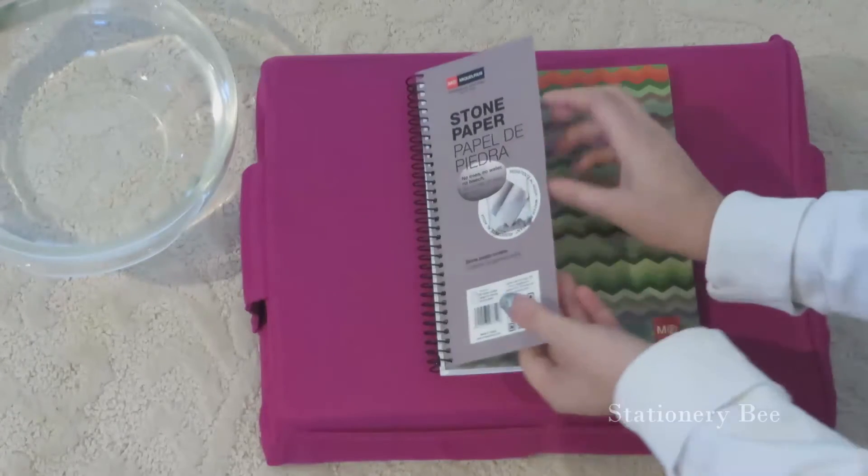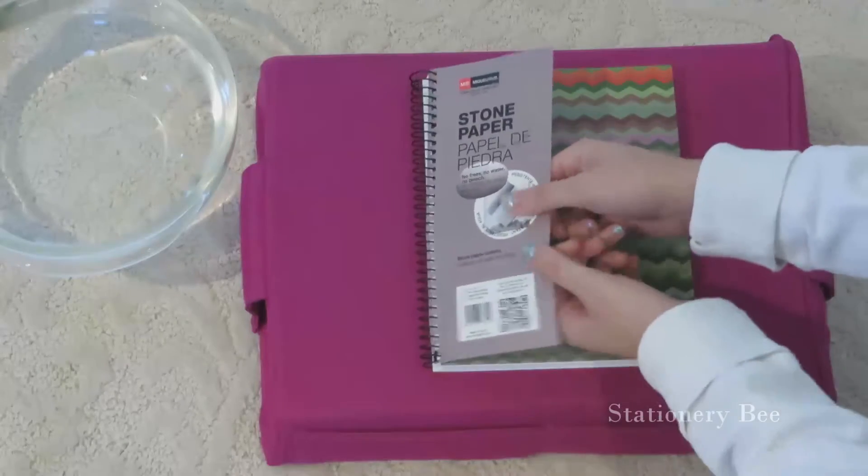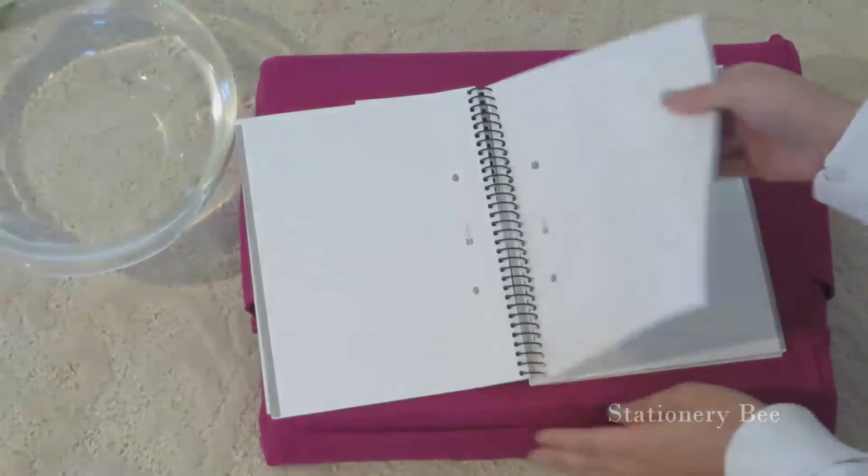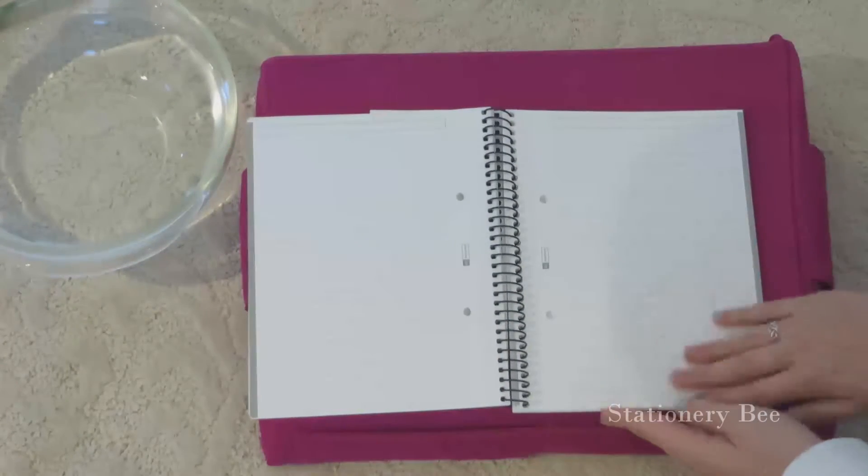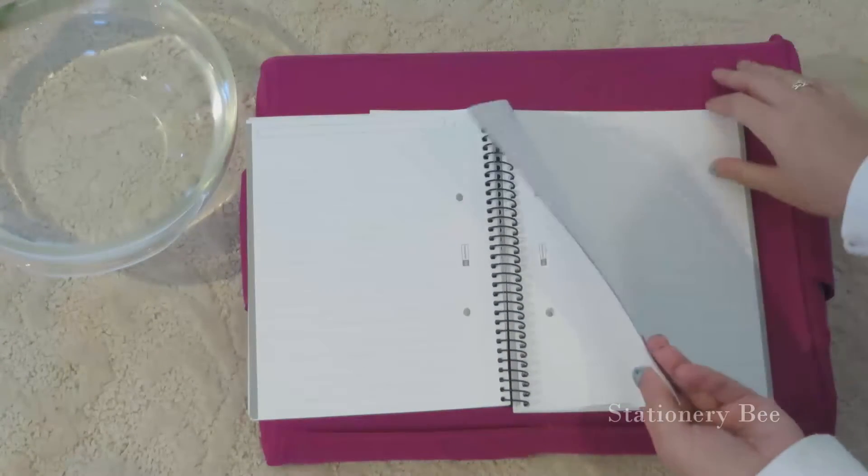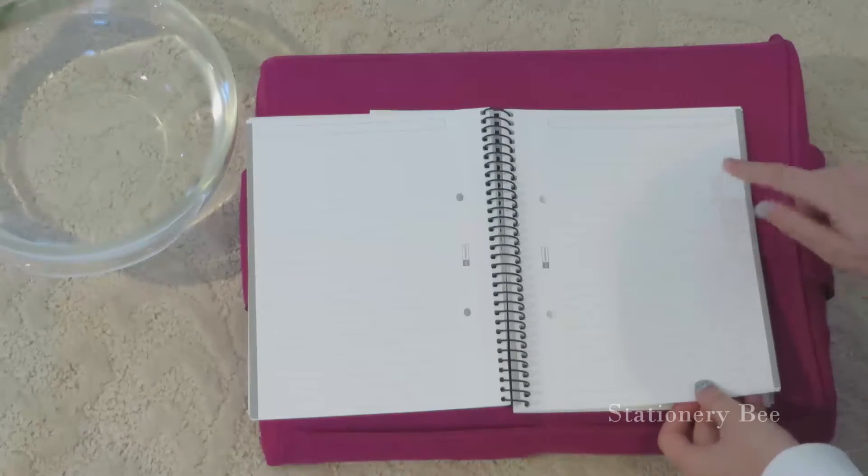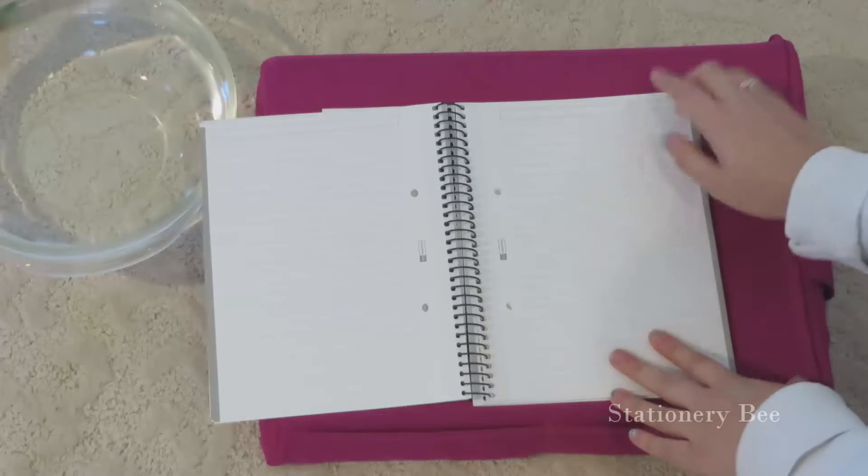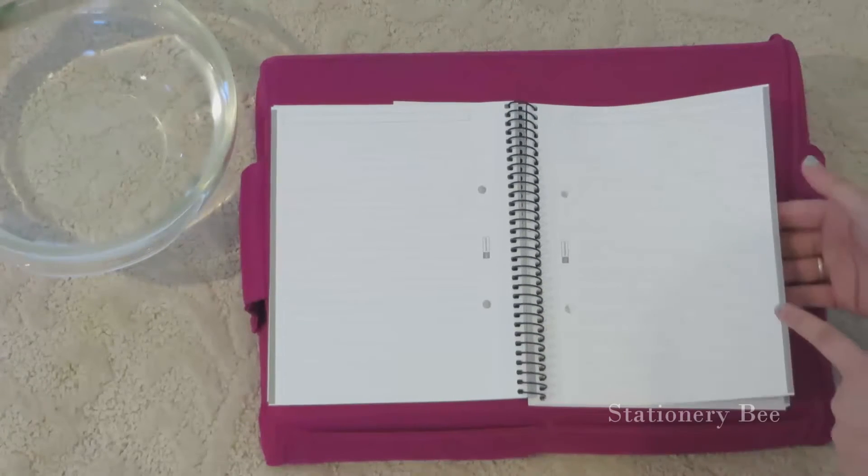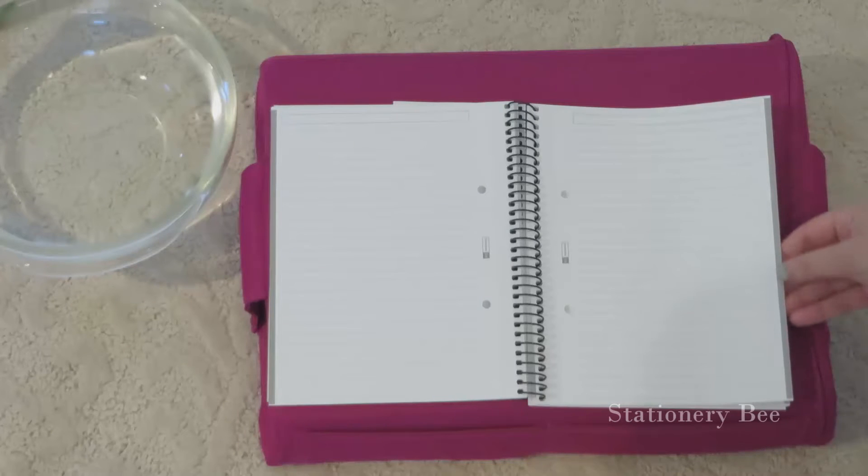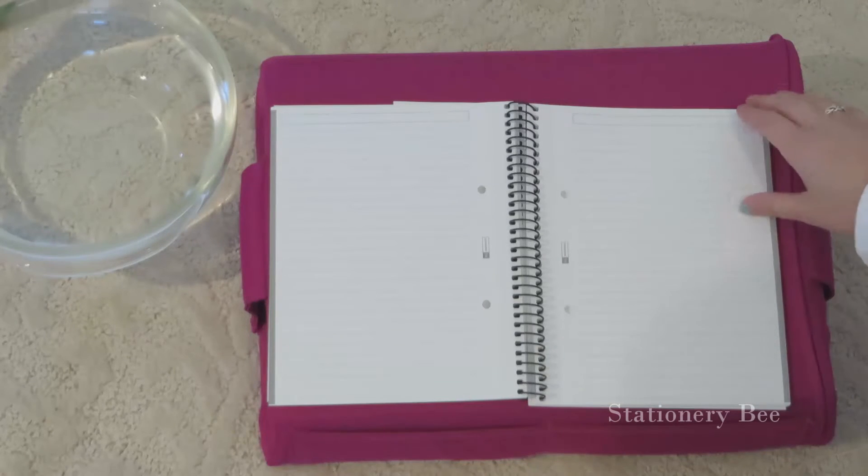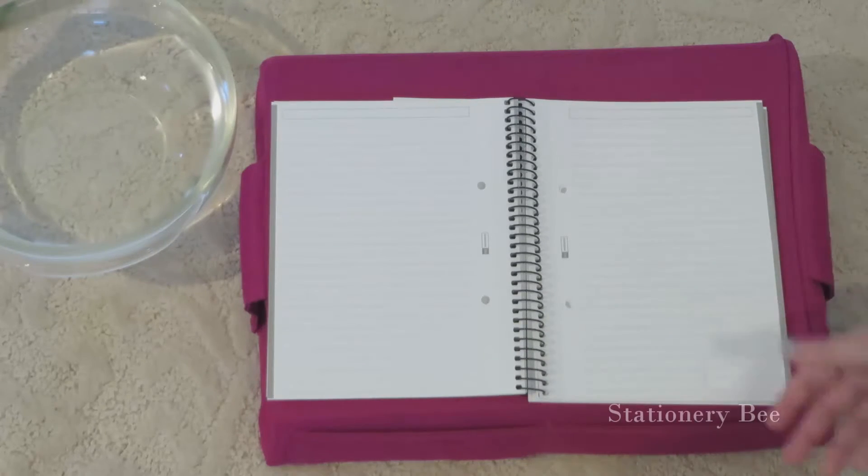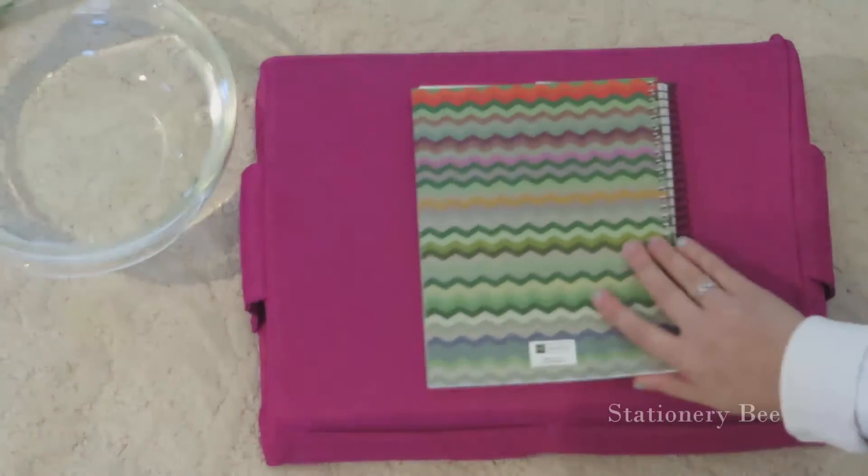So this is the front. The entire notebook is made out of the stone paper, so even this flap right here. It's tear resistant as I will demonstrate later on. This is what it looks like inside—all the pieces of paper are gray lines and gray borders. One of the Miquelrius signatures are to color the borders with a certain color. For example, this one is gray but there are others that are multi-colored.